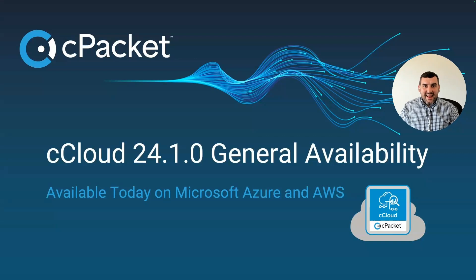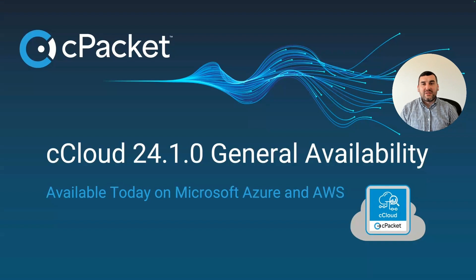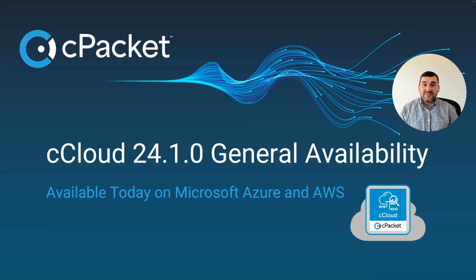Hello and thank you for tuning in today. My name is Trey Mozagemba, I am the Cloud Product Manager here at CPacket Networks. Today we wanted to do a quick release overview of our C-Cloud 24.1.0 general availability release, which is available today on Microsoft Azure and Amazon Web Services platforms. This release is particularly significant because it's the first time we've been able to simultaneously release our latest images on Azure and AWS on the same day.